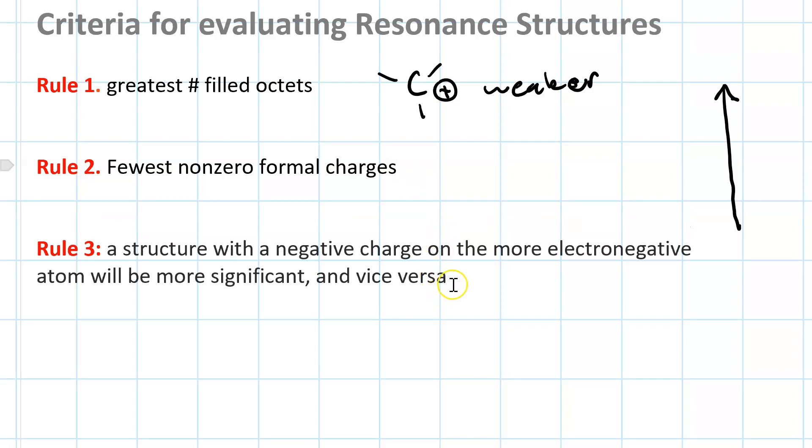And rule number three, if you're going to have a negative formal charge, it's better to put it on the more electronegative atom.